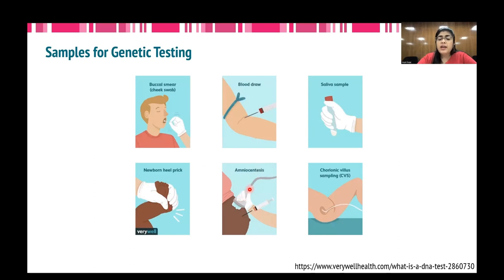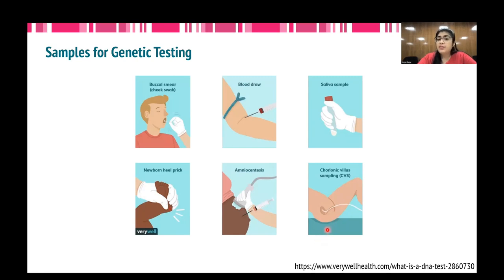In case of prenatal testing, amniocentesis is done in which amniotic fluid surrounding the fetus is taken using a needle piercing through the abdominal wall of the mother. CVS — chorionic villus sampling — is a little tricky and is also used for prenatal testing. In this procedure, a small tissue from the placenta is taken for testing, either with a catheter through the cervix or through the abdominal wall and uterus using a thin needle.